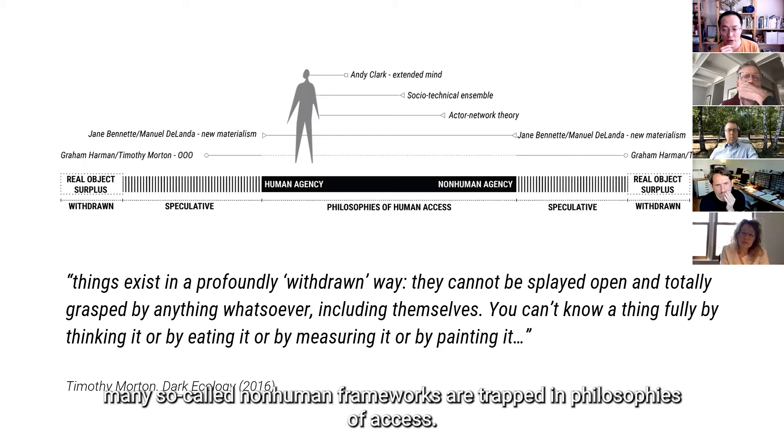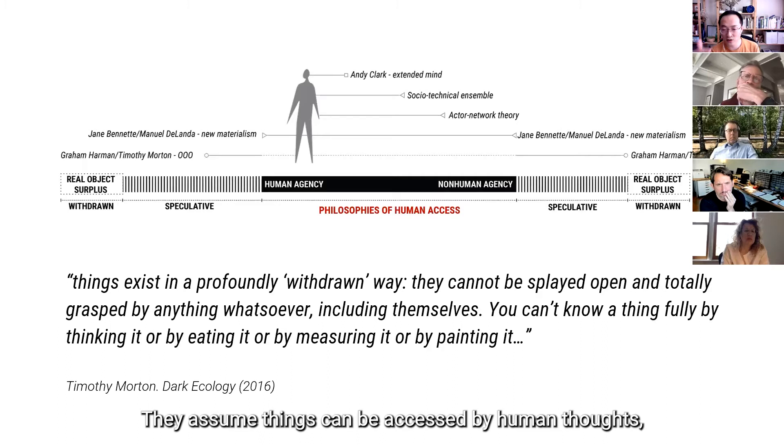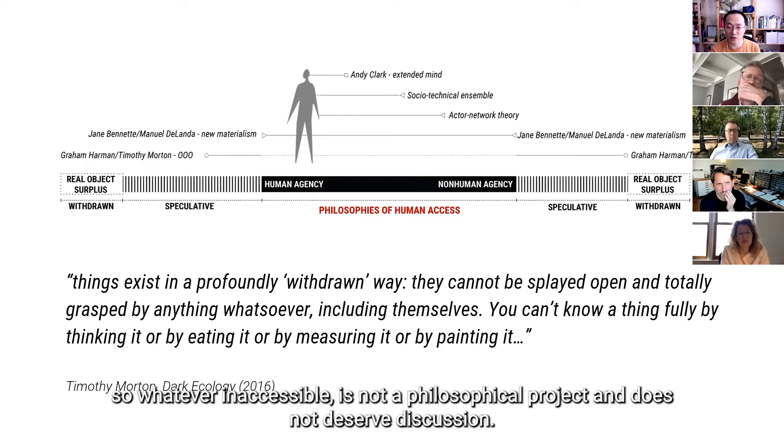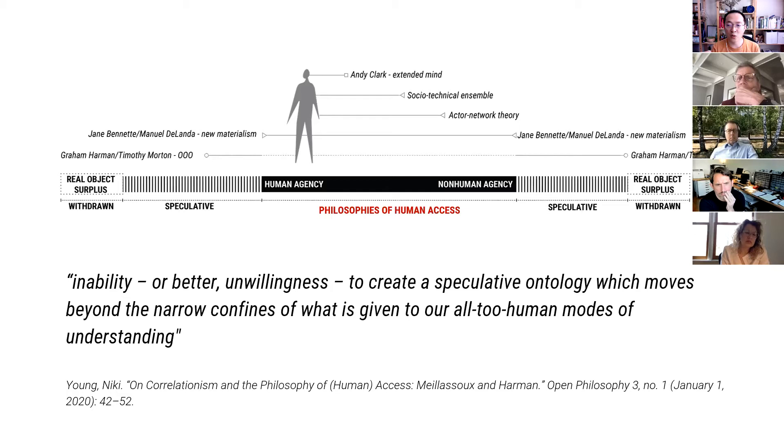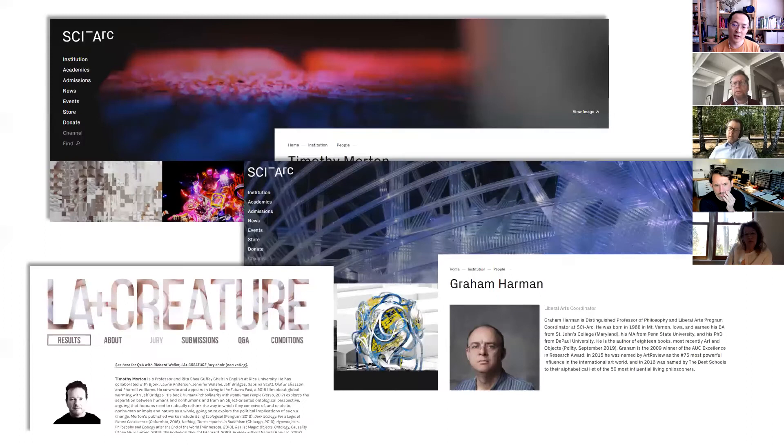They assume things can be accessed by human thoughts. So whatever is inaccessible is not a philosophical project and does not deserve discussion. And therefore, Triple O, what Triple O is really critical about is the present day's philosophical thinking's inability, or better, unwillingness to create a speculative ontology, which moves beyond the narrow confines of what is given to our all-too-human modes of understanding.